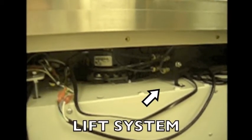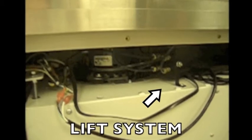Using the cordless drill, remove the back panel of the unit to expose the blower and lift system.